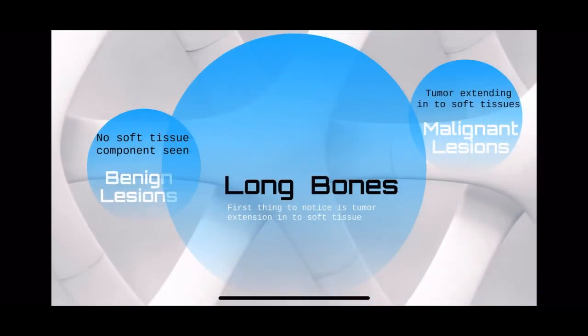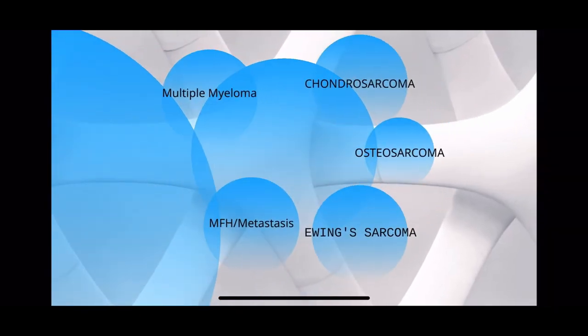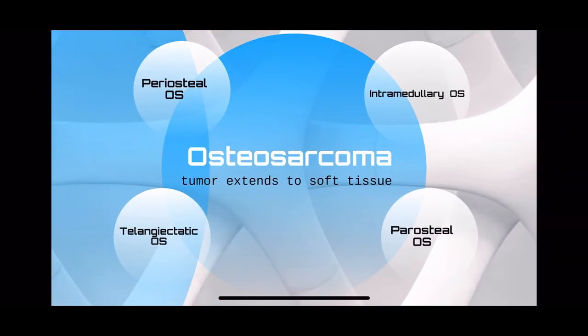In the long bone, if you get an X-ray in which the lesion is extending into the soft tissues, it has to be a malignant lesion. In malignant lesions, let's see how to differentiate them. Osteosarcoma — everyone knows — there is intense periosteal reaction.